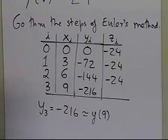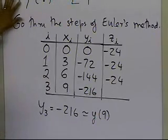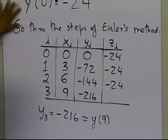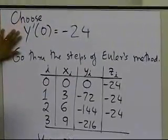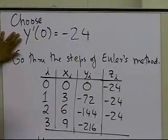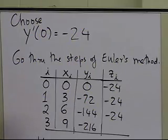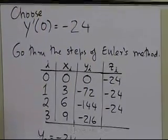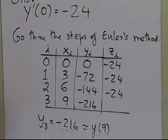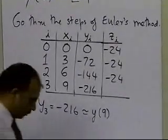What I can do is continue this process of choosing a different value for y'(0). In order to be able to get y₃ as close as possible to 0, which is y(9), I can choose a different value for y'(0), and continue this process till I find that the value of y(9) is close to 0. But what I can also do is use some kind of an interpolation technique to be able to come up with a better initial guess for y'(0).